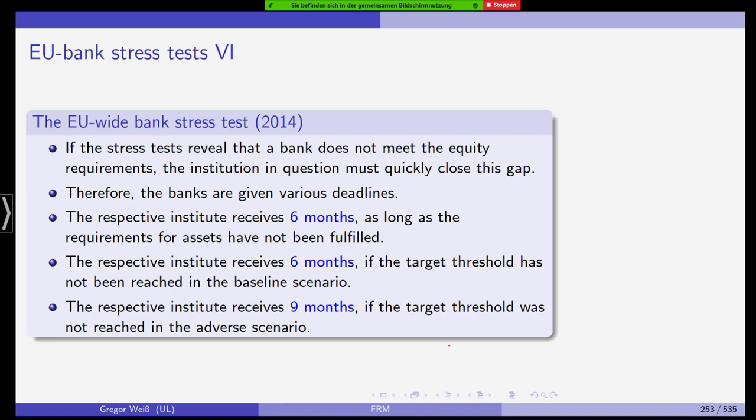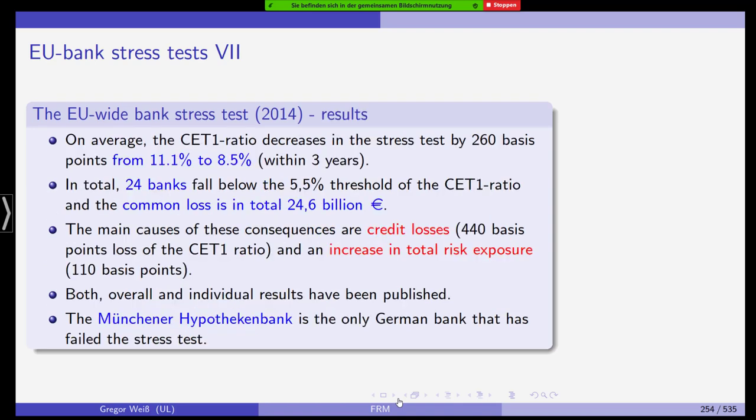If the stress test revealed that a bank does not meet the equity requirements, the capital requirements, then they had certain deadlines in which they should fulfill. What were the results? The CET1 ratio decreases in the stress test by 260 basis points to 8.5 percent. In total, 24 banks fell below the 5.5 percent threshold, meaning a common loss in CET1 ratio of 24.6 billion. The main cause were credit losses and an increase in total risk exposure. The only German bank that failed the stress test was Münchner Hypothekenbank. You can check the results of the stress test in 2014. There were several other ones. I've only given you the example of the 2014 EU-wide bank stress test. You can look up the results from the internet.